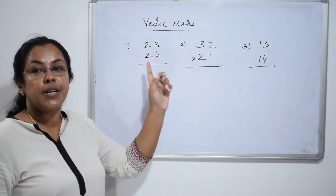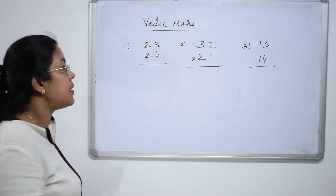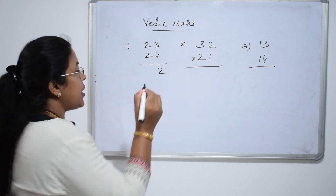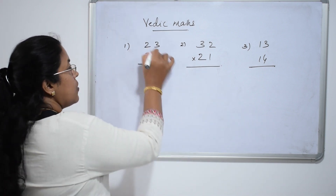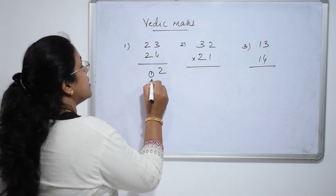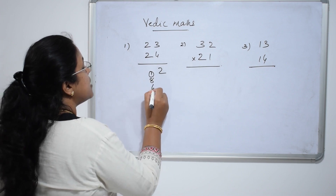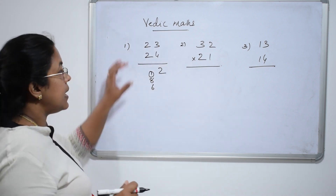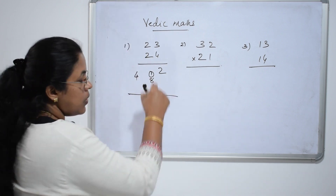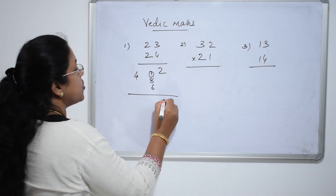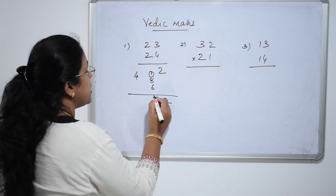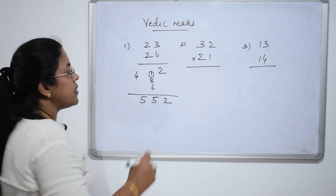Now, 23 into 24. What is the first step? Multiply 4 and 3: 4 threes are 12, carry over 1. Now cross multiply and add: 4 twos are 8, and 3 twos are 6. Multiply the tens digits: 2 twos are 4. Add all: 8 plus 6 is 14, plus 1 carry is 15 — carry over 1. 4 plus 1 is 5. Final answer: 552.